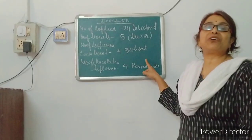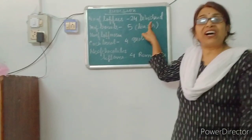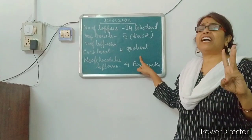Dear children, in division we generally use 4 terms. First term is dividend. Second term is divisor. Third term is quotient. And fourth term is remainder.